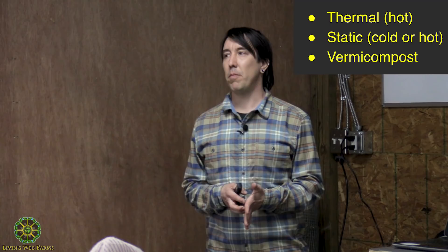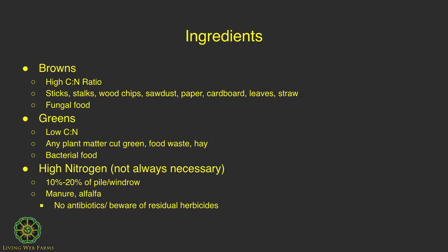The types of composting we're going to cover today — although there's more than just this — are thermal composting, which is also hot composting or thermophilic; static composting, which can be either hot or cold composting; and vermicompost. This is the section where you guys probably know a lot of this.